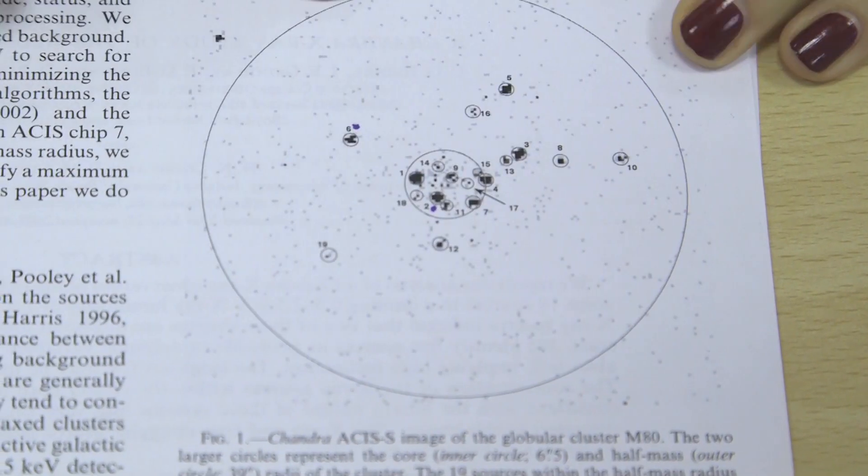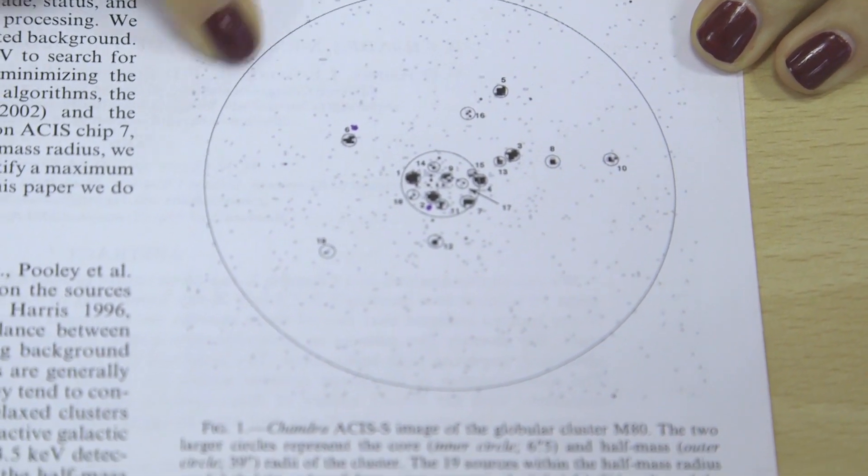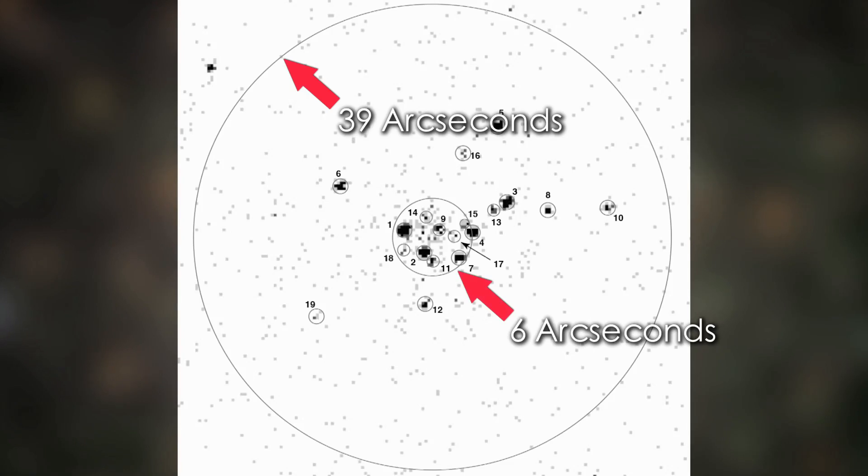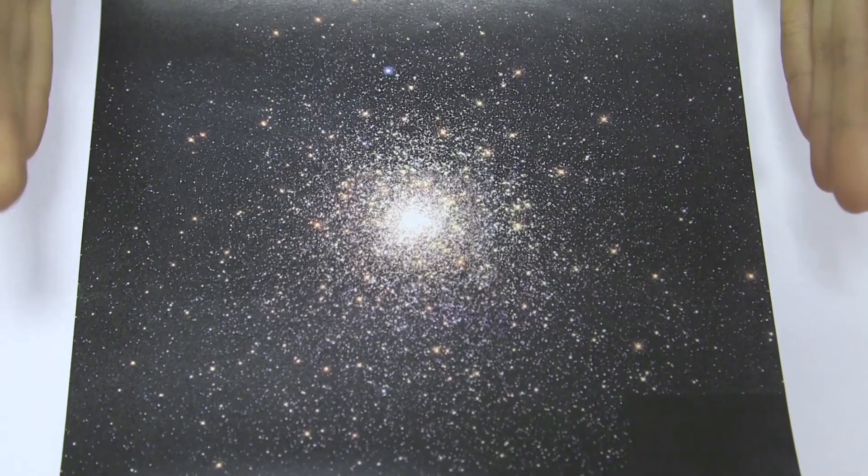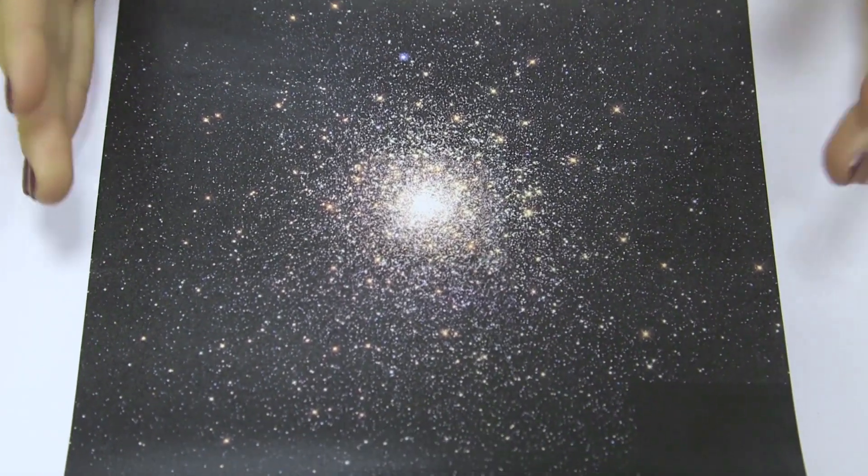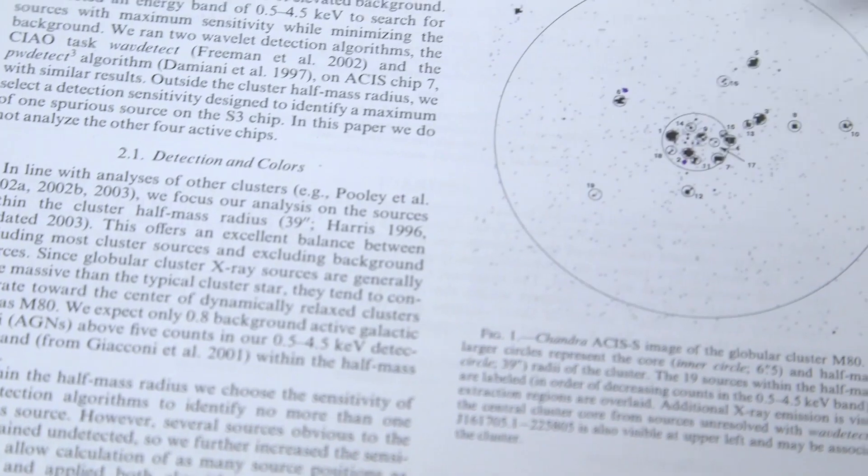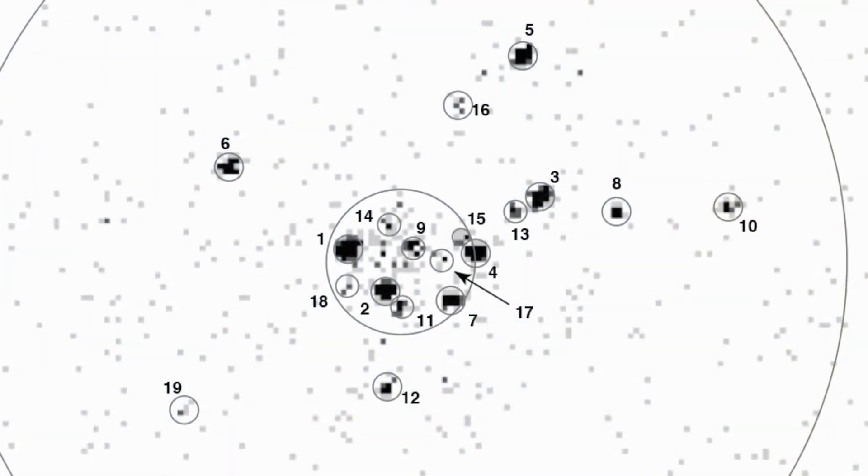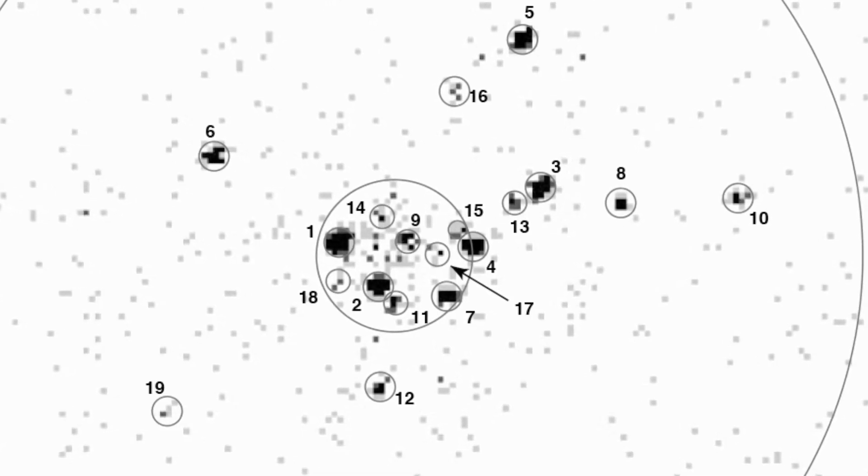So can you see these two rings that they've put round their image? This outer circle is at 39 arc seconds. A 60th of a degree is an arc minute and a 60th of that is an arc second. This inner one's at 6 arc seconds, whereas the whole cluster itself is 9 arc minutes across. So this X-ray image is right in the very center, in that densest region that's sort of overexposed in the optical image. They found 19 possible X-ray sources in the very middle of this cluster.